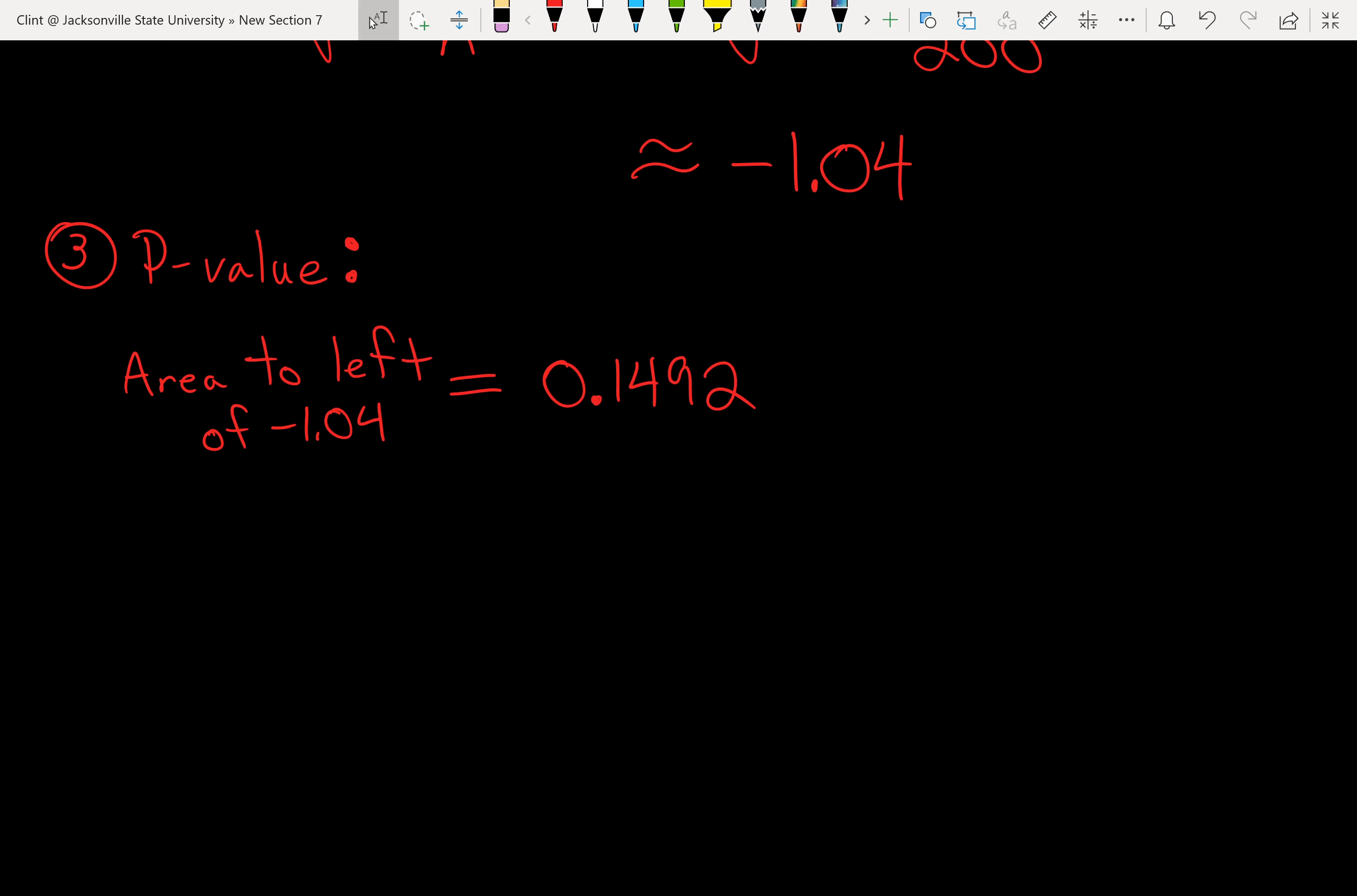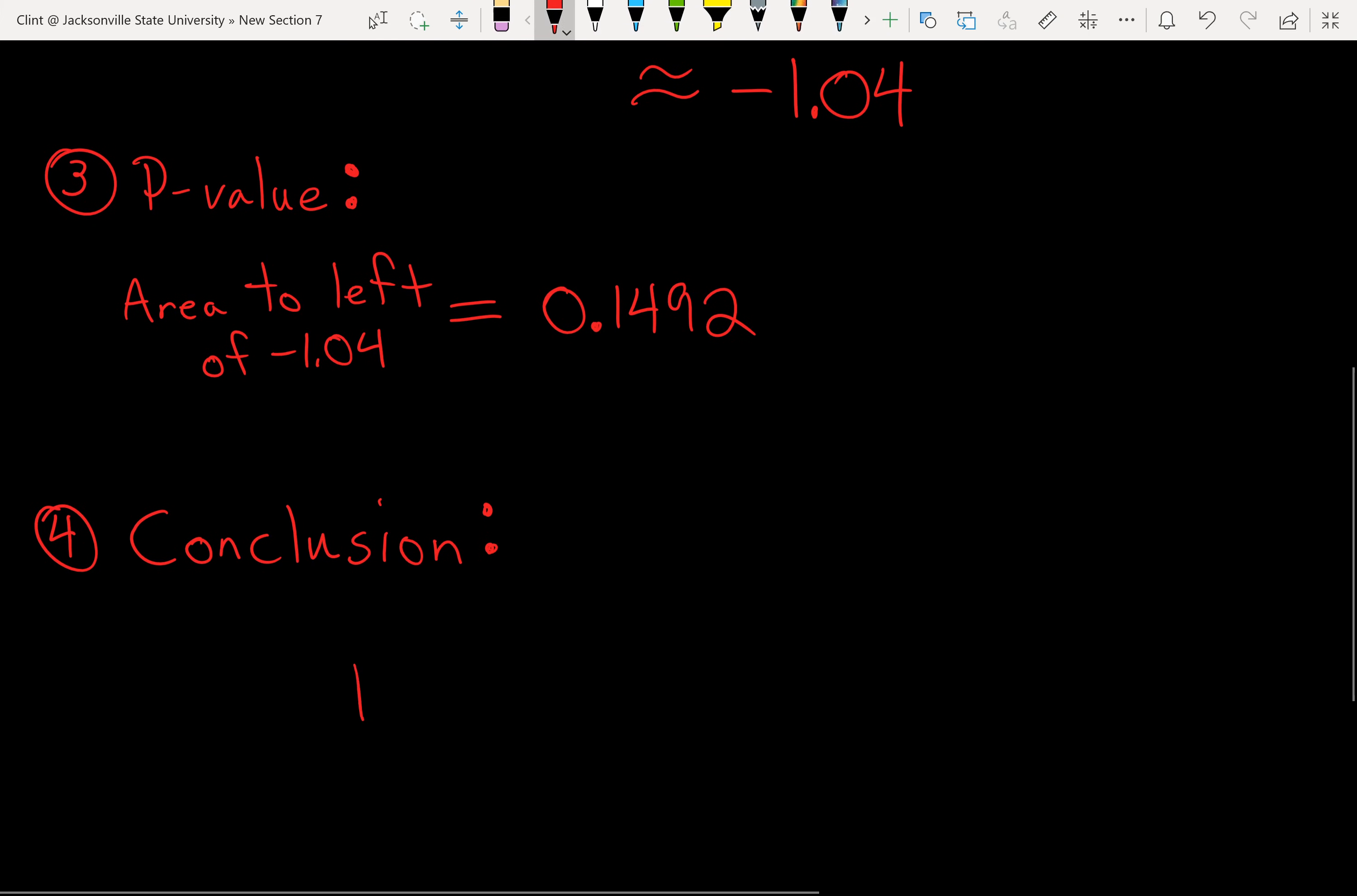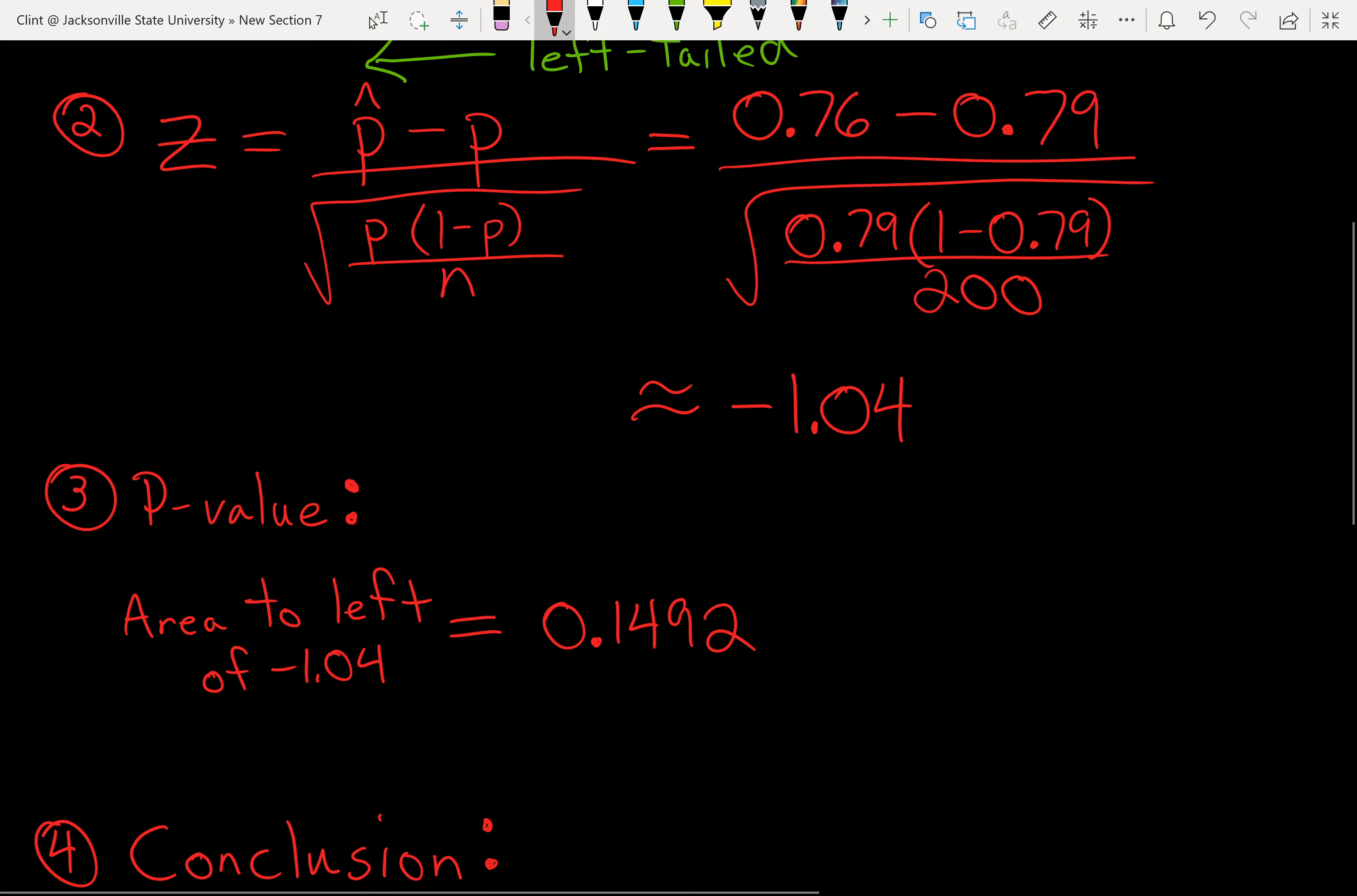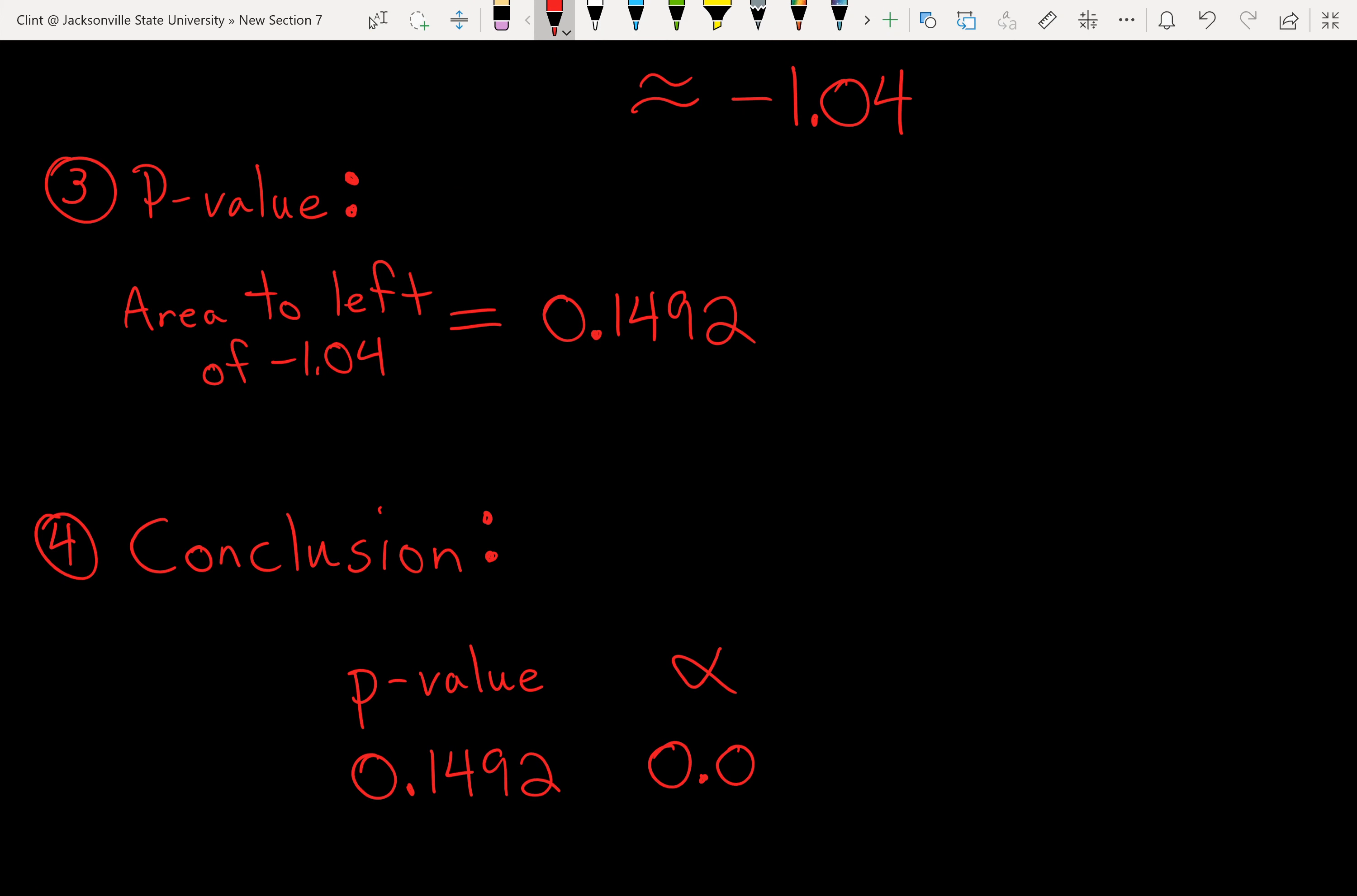Then we want to make our conclusion. So how do we draw our conclusion here? We're going to compare our p-value to our significance level. We want to know if our p-value is less than alpha. So our p-value is 0.1492. Our alpha significance level was 0.02. So here actually our p-value is greater than alpha.